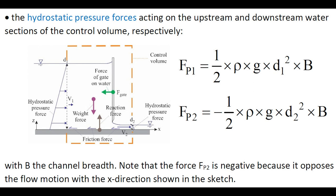Note that the downstream pressure force is negative because it opposes the flow direction with the x direction defined in the sketch.